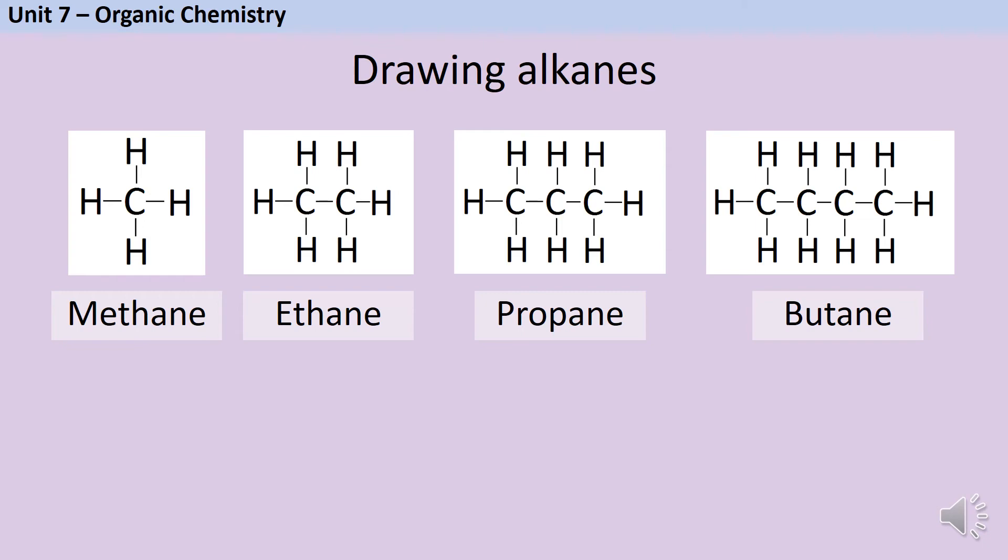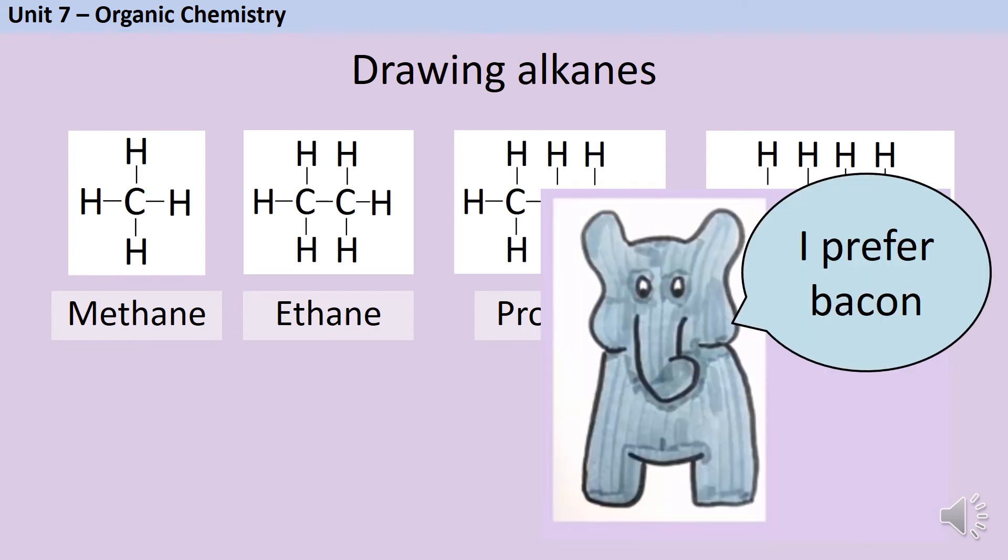It can be handy to have a little mnemonic to help you remember them and I like to use 'most elephants prefer bacon' so most starts with m for methane, elephant starts with e for ethane, prefer starts with pr to give you a double hint for that propane and then bacon for butane.